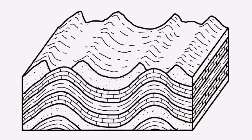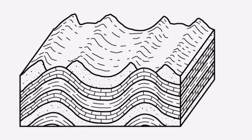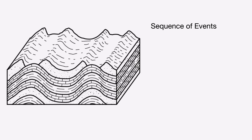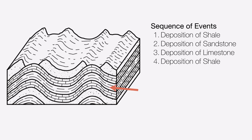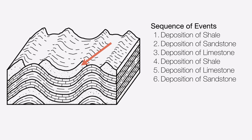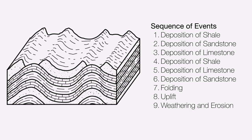Here are some layers of rock that have clearly been deformed. According to the law of superposition, the first thing deposited is the shale on the bottom, then sandstone, limestone, more shale, more limestone, and the top layer of sandstone, some of which is missing. All these layers had to be deposited horizontally first, and then at some point later on there was deformation — in this case, folding. The folding caused a period of uplift which allowed that sandstone to be weathered and eroded, explaining why some of it is missing. That's a complete sequence of events.